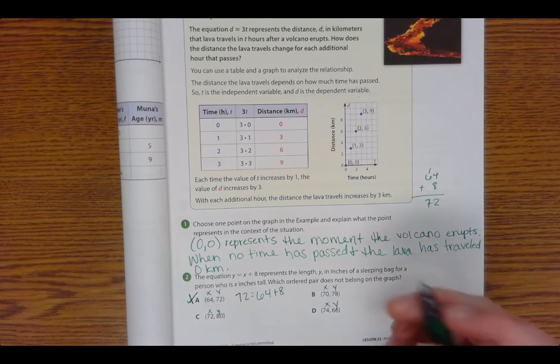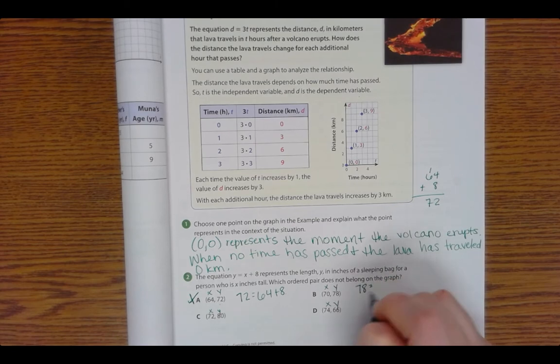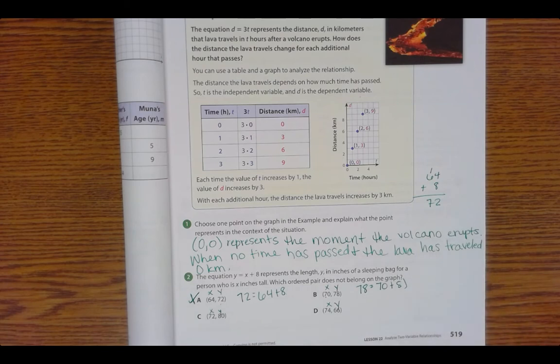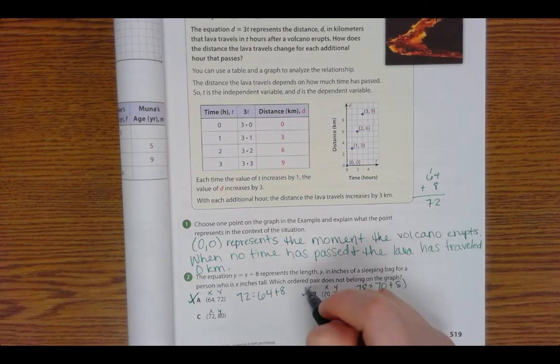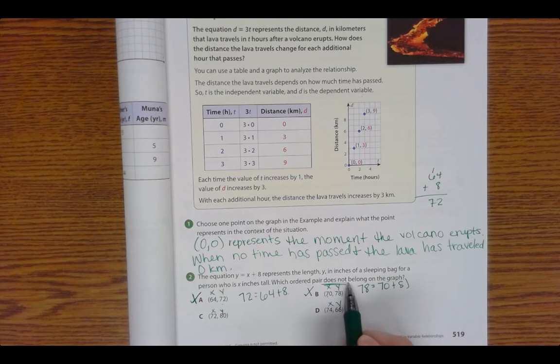All right. Let's go to B, 70 and 78. So 78 equals 70 plus 8. Well, we know 70 plus 8 gives me 78, so that one's right. So that can't be our answer because we're looking for the one that does not belong.